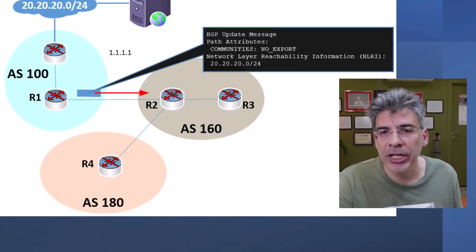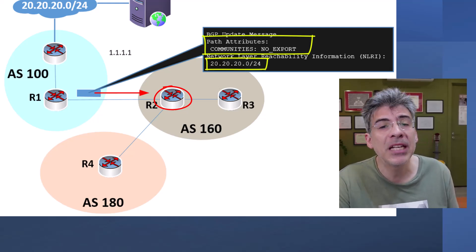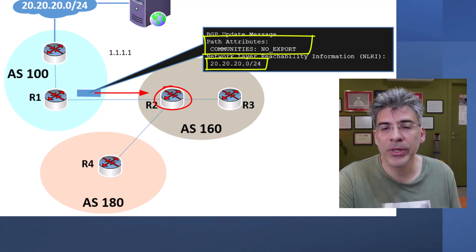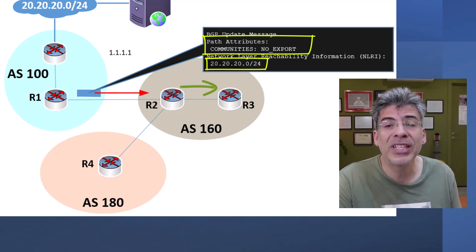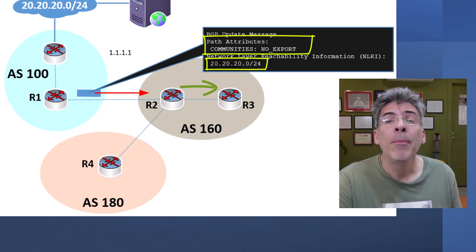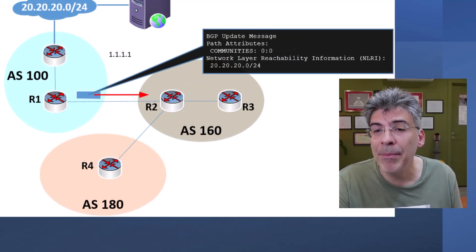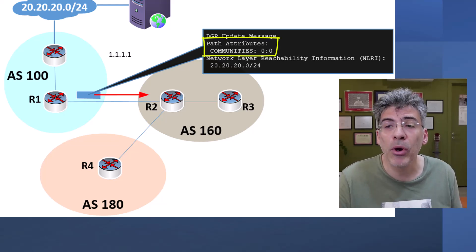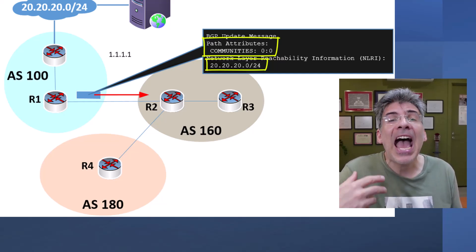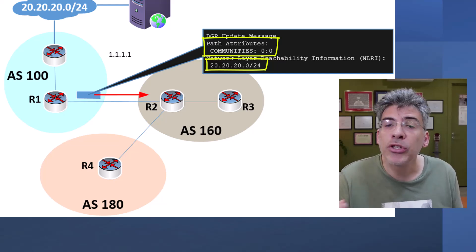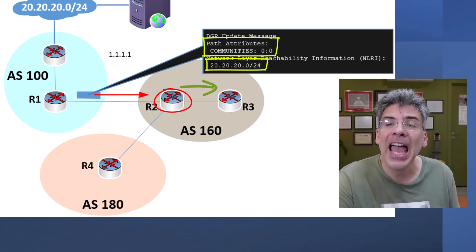What about the no-export community? If R2 receives the no-export community attached to the route in its BGP update, it will still install the route into its own BGP table but won't advertise it to any eBGP neighbors. That means R3 will receive the update because it's an iBGP neighbor, but not R4, which is the eBGP neighbor. If the BGP community is updated with a value of 0:0 — the internet community — it simply says advertise the network to all BGP peers, so R2 will advertise the 20.20.20.0/24 network to both R3 and R4.